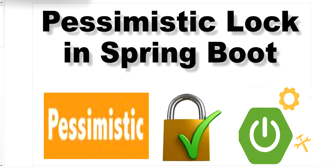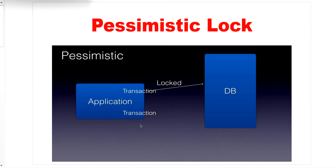Welcome to this channel. Today in this video we will learn what is pessimistic lock, what are the benefits of using pessimistic lock, and how to enable pessimistic lock in our Spring Boot application. There are plenty of situations when we want to retrieve data from a database and sometimes we want to lock it for ourselves for further processing so no one else can interrupt our action. A pessimistic lock is a concurrency control mechanism used in database systems, ensuring that no other transaction can modify or delete the reserved data.